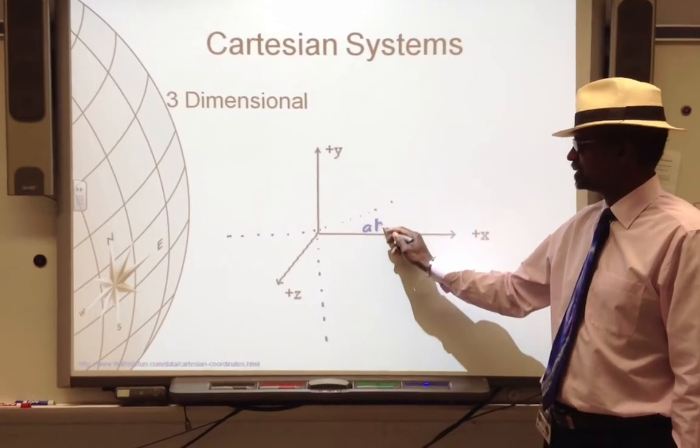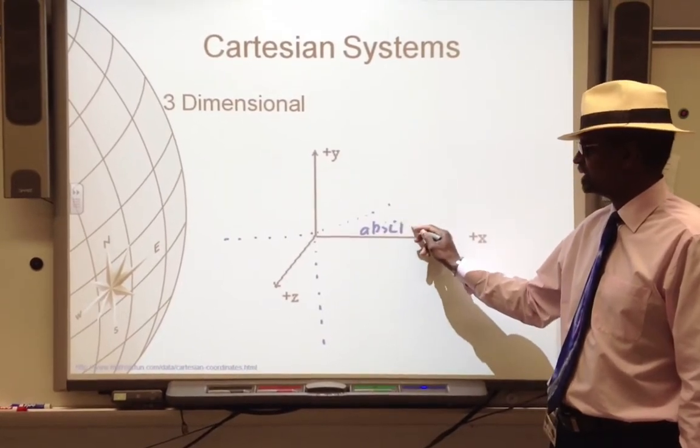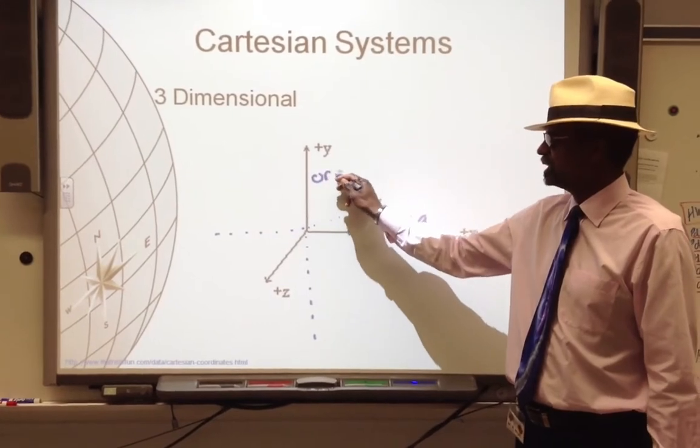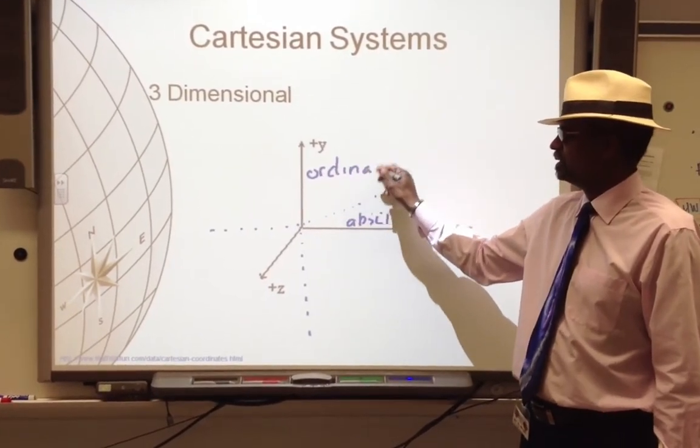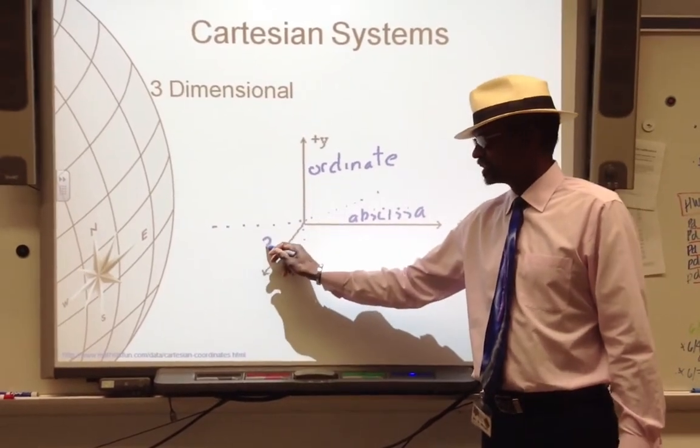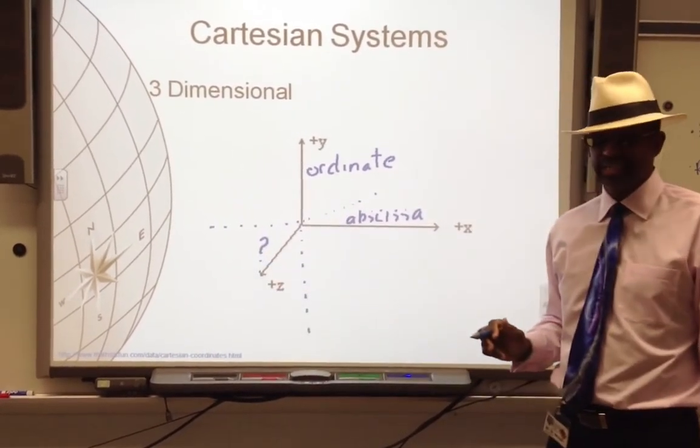This axis is still called the abscissa. This axis is the ordinate. And we will leave it up to you to discover the name of the z-axis.